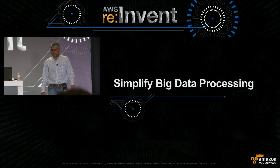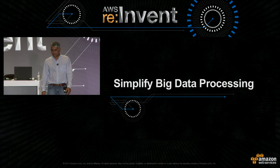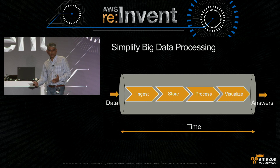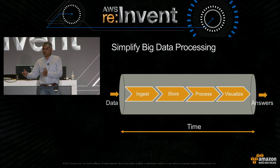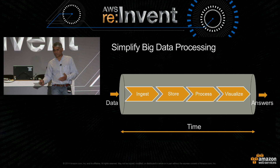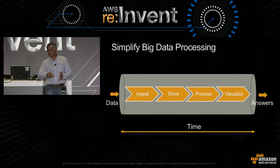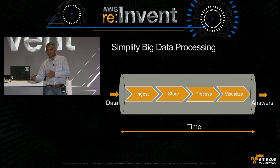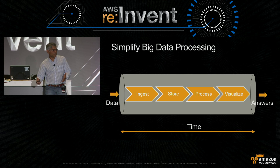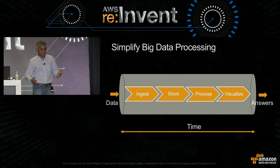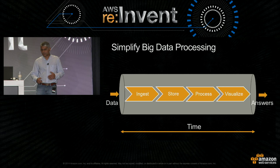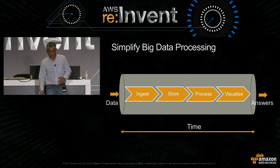One way of thinking about big data processing is as a pipeline — with data flowing in on one side and answers coming back on the other. There is a time-to-knowledge dimension, and data goes through multiple stages: ingest, store, process, and visualize. The store and process may not be a single run — in many cases there's a loop: you store, process, store again, process again, and then data moves forward. Whatever you pick in between needs to fit within your time-to-knowledge or time-to-answer. For real-time systems, that time is in the order of milliseconds.